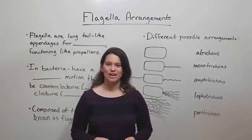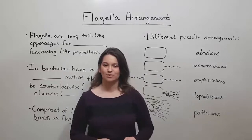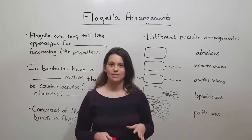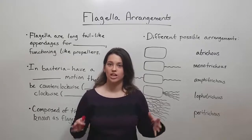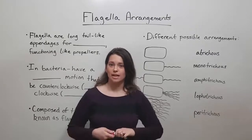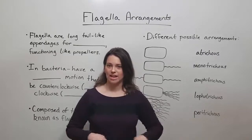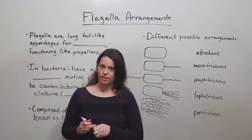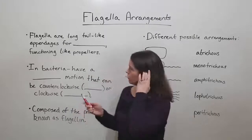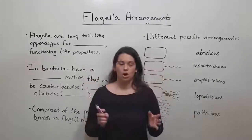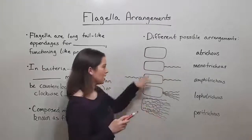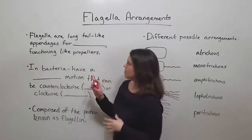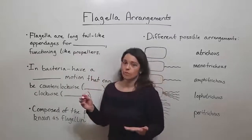Hi everyone and welcome to Biology Professor. Today we're going to be talking about different ways in which flagella can be arranged around bacterial cells. Let's start briefly by talking about what flagella are. They are long tail-like appendages, like the ones pictured here, that are used for movement.